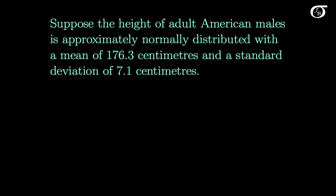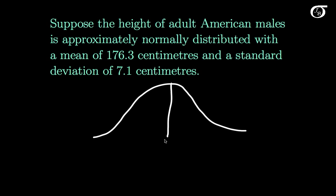Suppose the height of adult American males is approximately normally distributed with a mean of 176.3 centimeters and a standard deviation of 7.1 centimeters. That distribution looks something like this — a normal distribution with the mean and median in the middle at 176.3, since the mean and median are the same for the normal distribution, and a standard deviation of 7.1 centimeters. We can use this distribution to do some probability calculations.